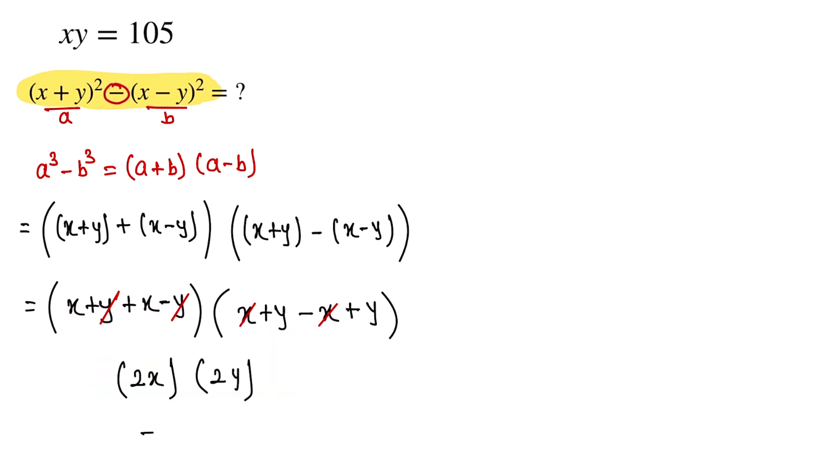Now we multiply this, so this one is equal to 2x into 2y, which equals 4xy. The value of xy is given in the question as 105.